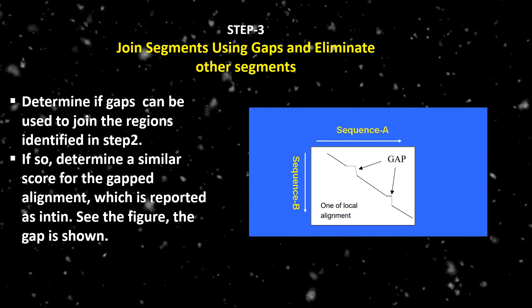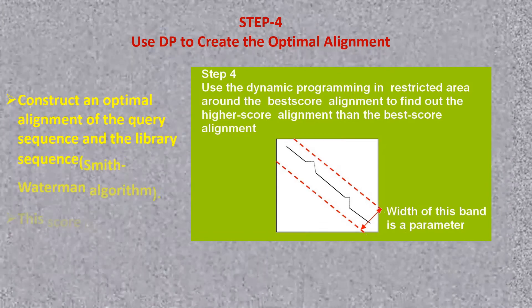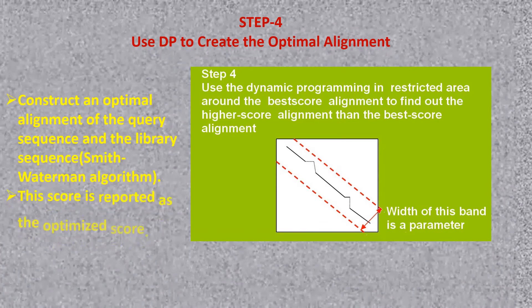Step 3: join segments using gaps and eliminate other segments. It determines if gaps can be used to join the regions identified in step 2. If so, determine a similar score for the gapped alignment, which is reported as inton. See the figure where the gap is shown. Step 4: use dynamic programming or DP to create the optimal alignment. Construct an optimal alignment of the query sequence and the library sequence using the Smith-Waterman algorithm. This score is reported as the optimized score. Here the width of the two bands is the parameter.